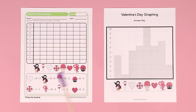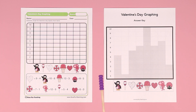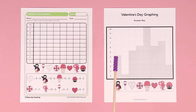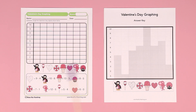Or if it's a small group center, they can do a self-check after they're done. This is a fun activity you can use for Valentine's Day or the month of February. You can have your students do it by themselves or work in small groups.